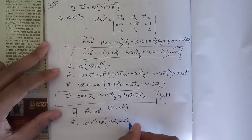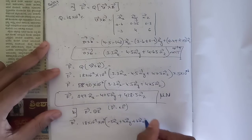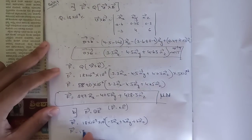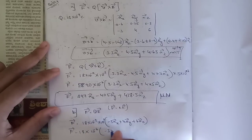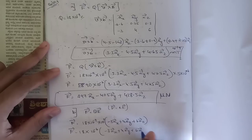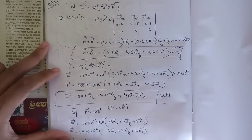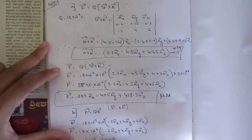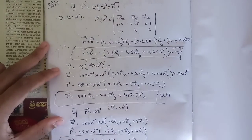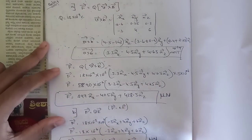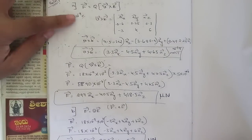F = 18×10^-9 × 10^3 × (-3ax + 4ay + 6az) = 18×10^-6 × (-3ax + 4ay + 6az). Multiplying out: 18×(-3) = -54ax, 18×4 = +72ay, 18×6 = +108az. So F = (-54ax + 72ay + 108az) micronewtons.